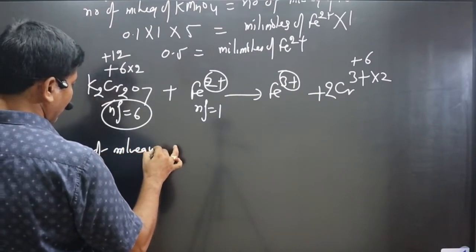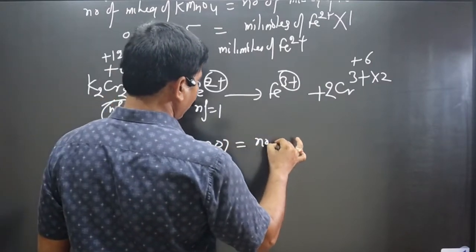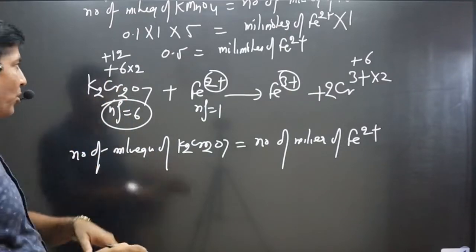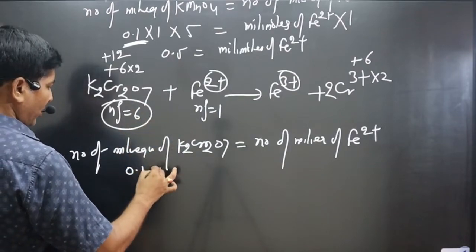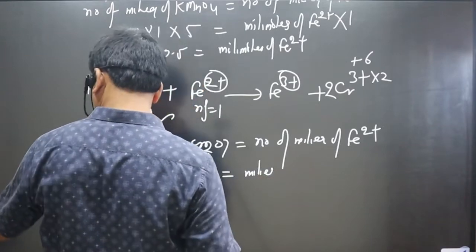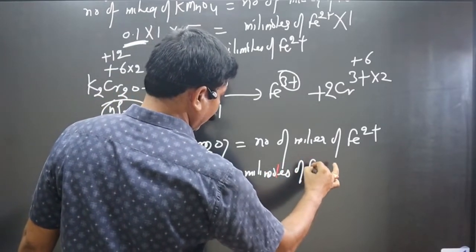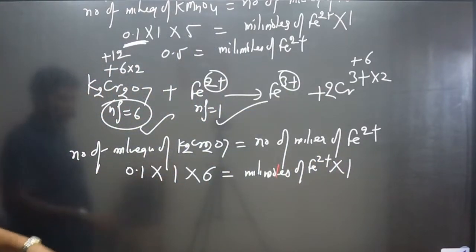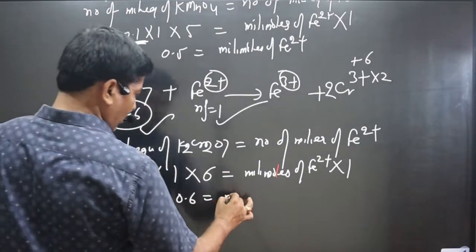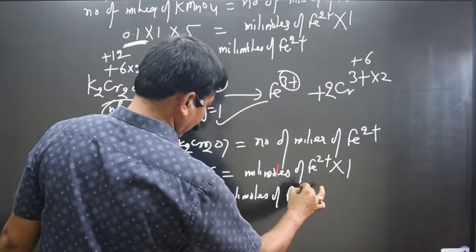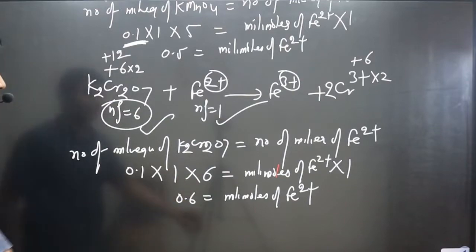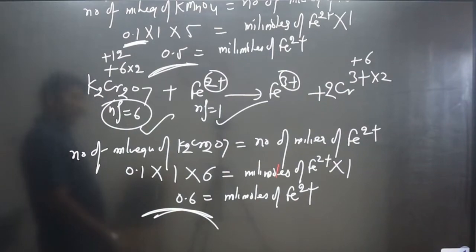Applying milliequivalents: milliequivalents of K₂Cr₂O₇ = milliequivalents of Fe²⁺. Using molarity × volume × n-factor: 0.1 × 1 mL × 6 = 0.6 millimoles of Fe²⁺. So K₂Cr₂O₇ oxidizes 0.6 millimoles of ferrous ion — more than KMnO₄ which oxidized only 0.5 millimoles.